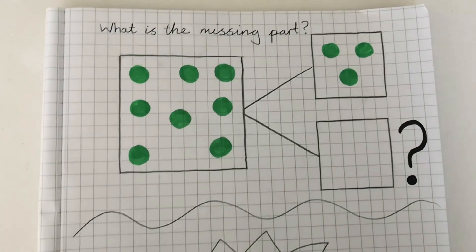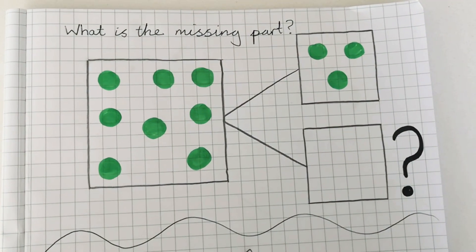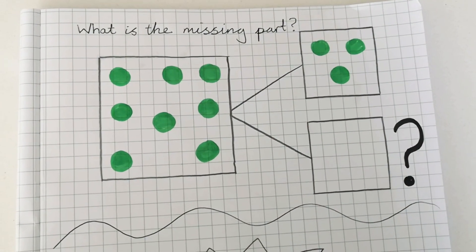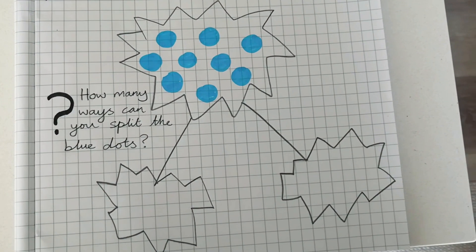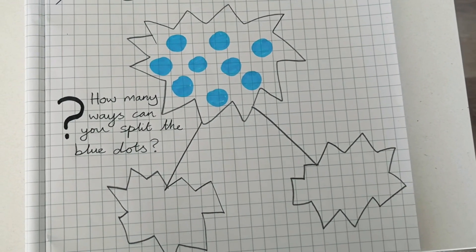Here are two challenges for you. First of all, can you work out what the missing part is? And second, how many ways can you split the blue dots into their two parts? Good luck!